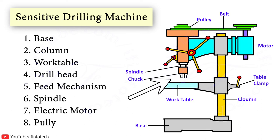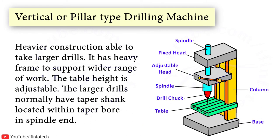The next type is the Vertical or Pillar type drilling machine, which is a free-standing, heavier construction able to take larger drills. It has a heavy frame to support a wide range of work. The larger drills normally have a taper shank located within the taper bore in the spindle end.